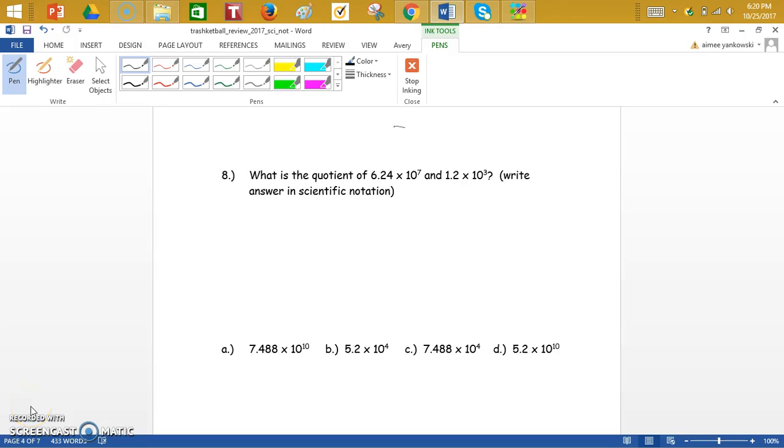Okay, I'm going to continue on with your trash kit ball review. Number 8, it says, what is the quotient of 6.24 times 10 to the 7th and 1.2 times 10 to the 3rd? You have to write your answer in scientific notation. Okay, so if they're asking about the quotient, quotient tells us we have to divide.